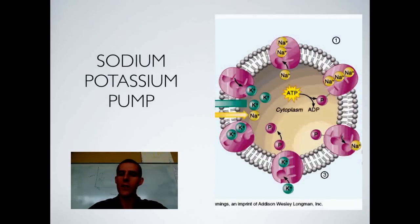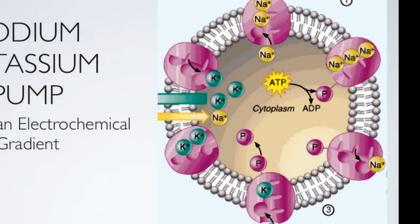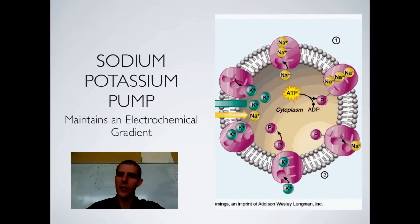One of the best known electrogenic pumps is the sodium-potassium pump. It maintains both an electrical and a chemical gradient. It pumps sodium ions out of the cell and potassium ions into the cell, setting up a situation with a lot of sodium on the outside and a lot of potassium on the inside. The body then uses that difference to do work. Note that the sodium-potassium pump sets up both an electrical gradient — a difference in charge on each side — and a chemical gradient, and that takes energy to work.